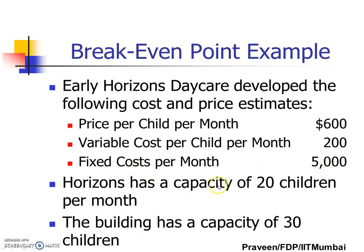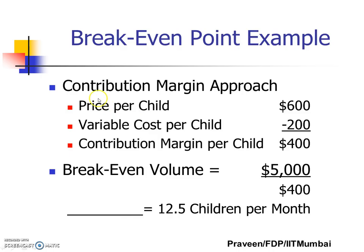The overall capacity of the daycare centre is 20 children per month, and the building has a capacity of 30 children. Using the contribution margin approach: price per child $600 minus variable cost per child $200 gives a contribution margin of $400 per child. Fixed cost $5,000 divided by contribution margin $400 gives us 12.5 children per month.